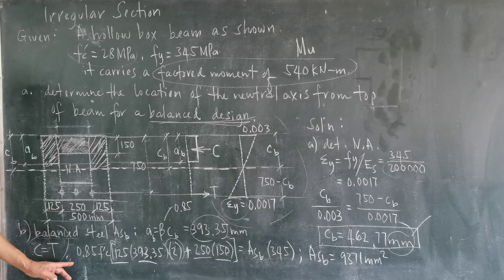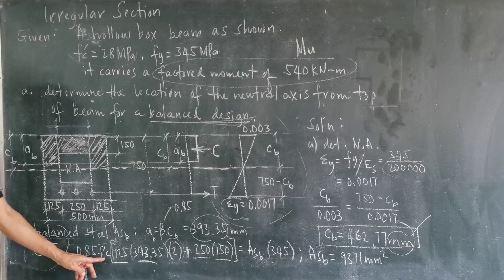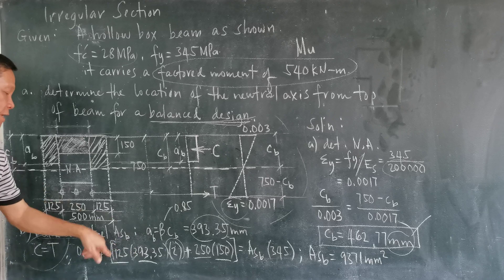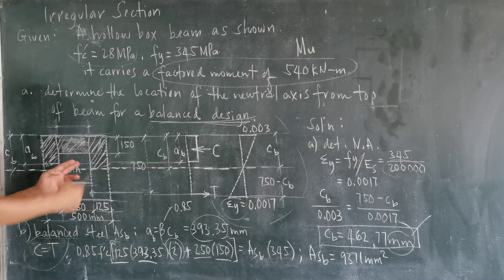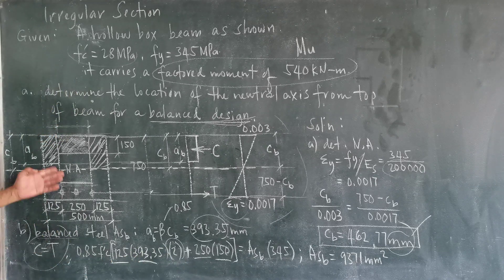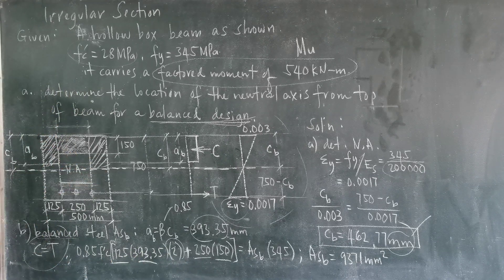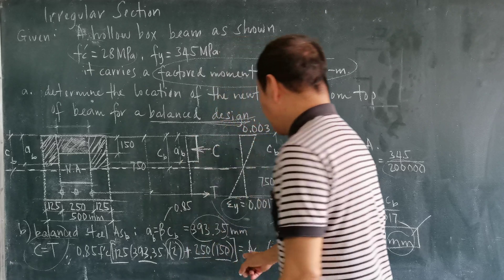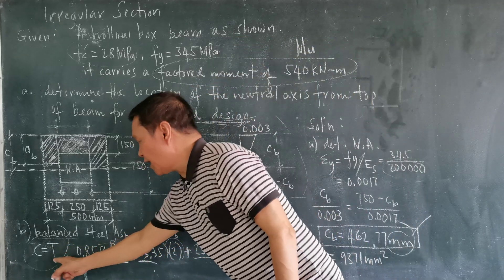So this came from the formula. For C, it's always equal to 0.85 F prime C times the area under compression taken separately. That's how to compute the C if it is an irregular area.